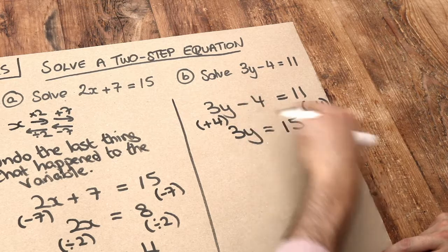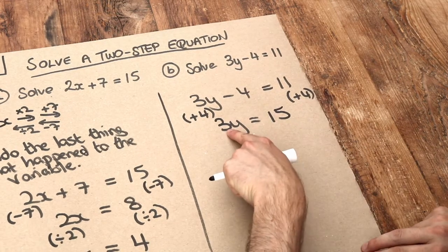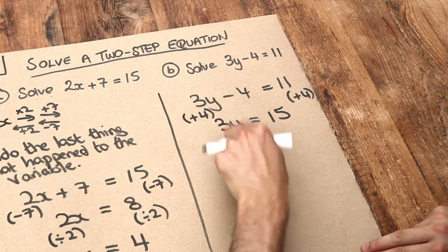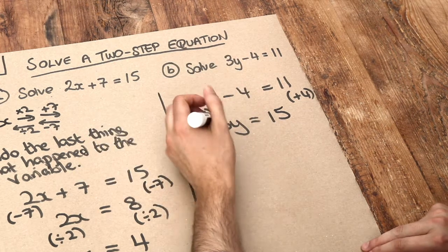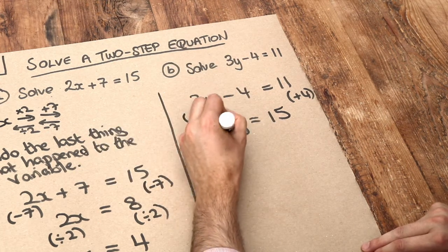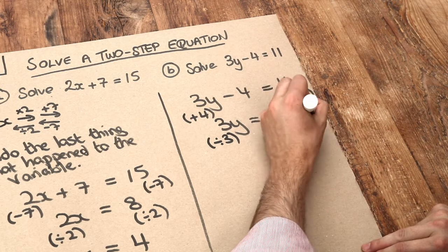We've undone the minus 4. Now we've got to get rid of that times by 3, so we're left with just y. If y was multiplied by 3, we undo the times by 3 by dividing by 3. We also have to divide the right-hand side by 3.